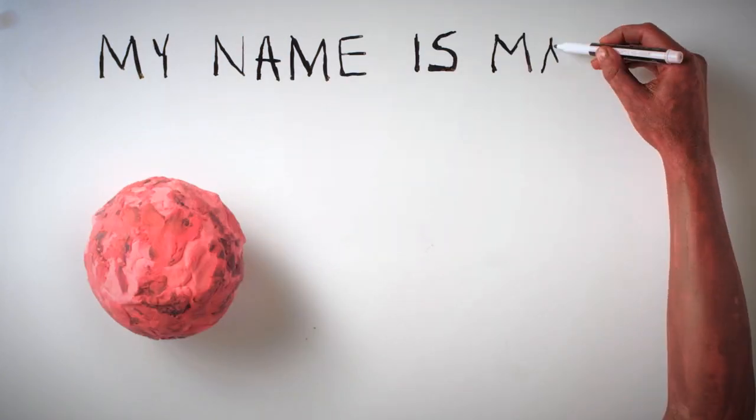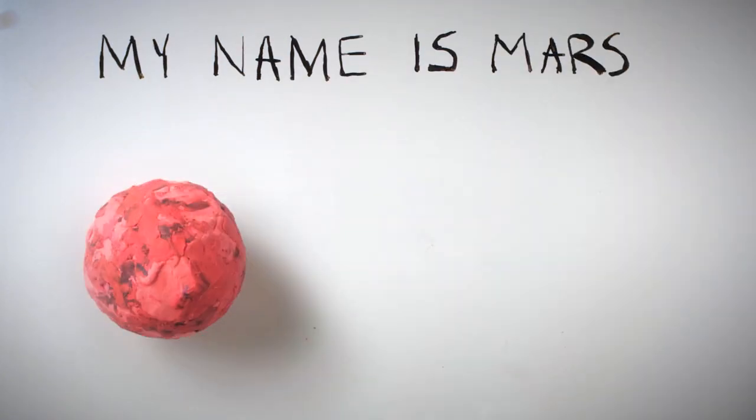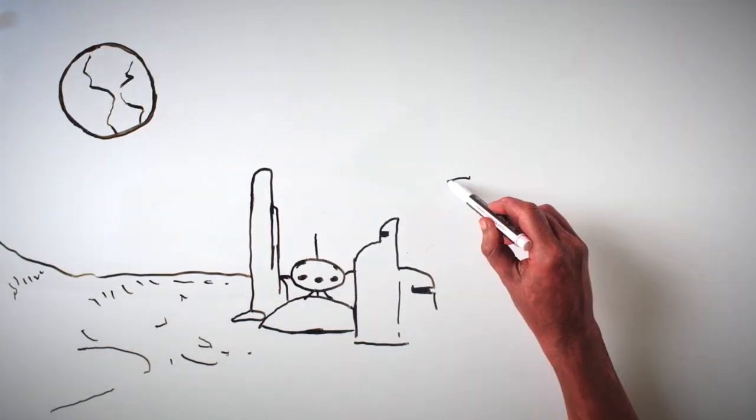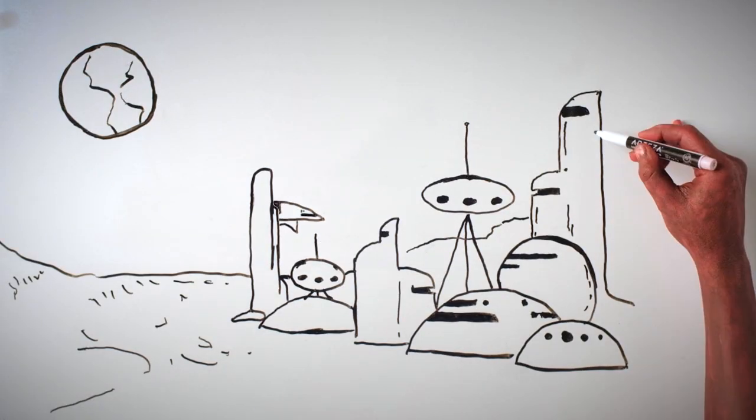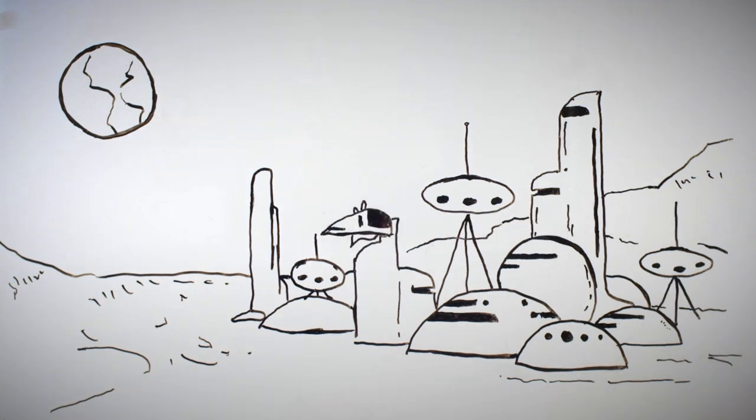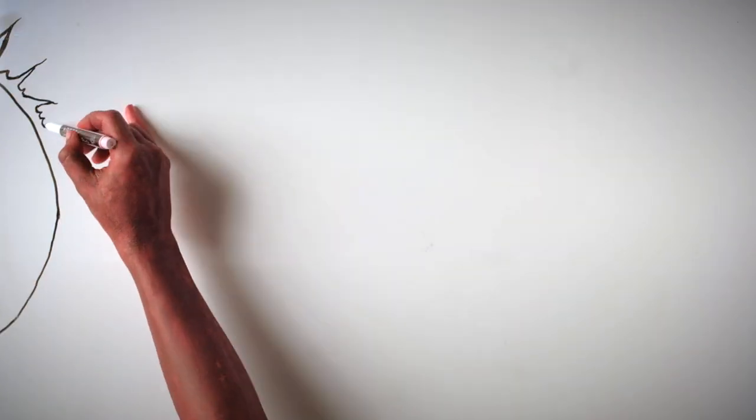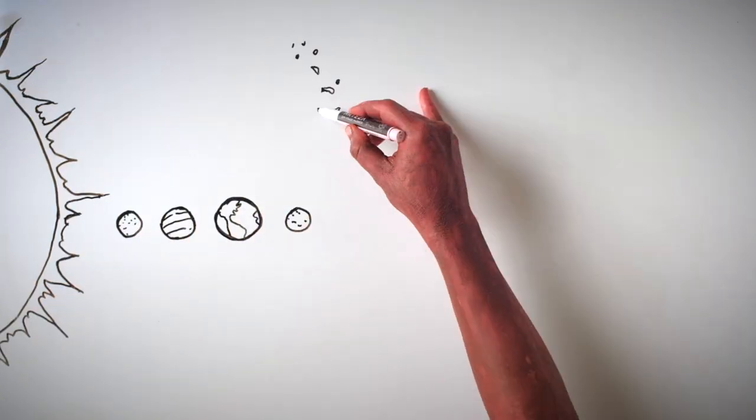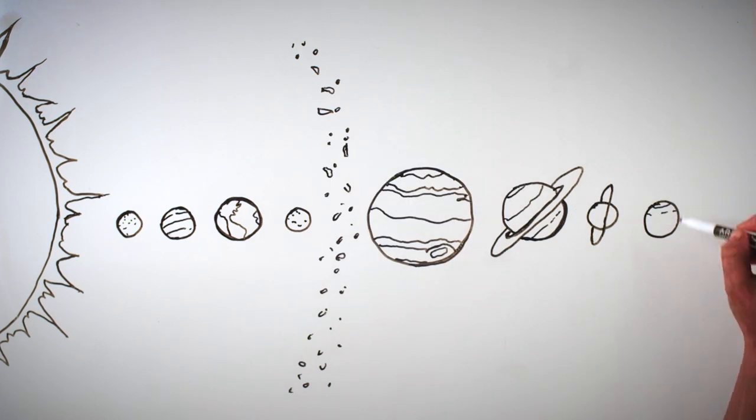My name is Mars. I wasn't always the most advanced, prosperous planet in the solar system. I was born 4 billion years ago, sired of the sun.